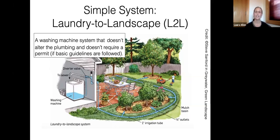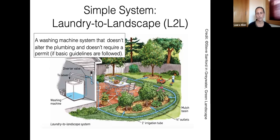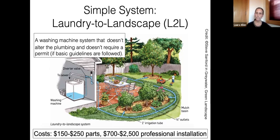You connect the graywater side to a system designed to match how much laundry you do and how much water your plants need. You do laundry, the pump engages, and it pumps water into your landscape into mulch basins. Normally everything is buried — water is below grade, not surfacing. The main line of tubing is one inch in diameter and the outlets are half inch, so anything in the water can pass through without clogging. The cost is usually a couple hundred dollars for parts, or $700 to $2,500 if you hire a professional for a one to two day project.